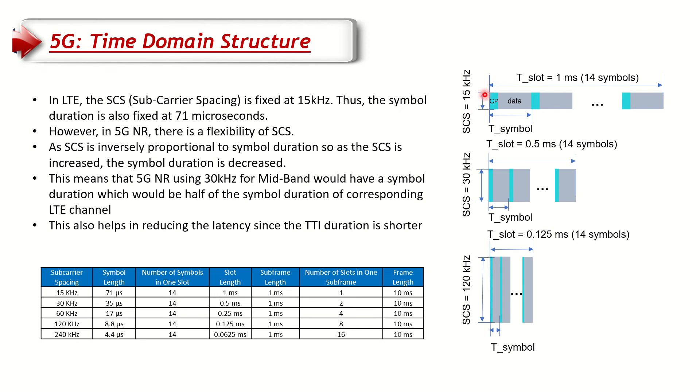That means if we have 15 kilohertz of subcarrier spacing, correspondingly our symbol length, a single symbol, will be around 71 microseconds. This means that if we need to put 14 symbols in one slot, as we require 14 symbols in one slot one subframe, that will need one millisecond. So 14 into 71 is equal to one millisecond.